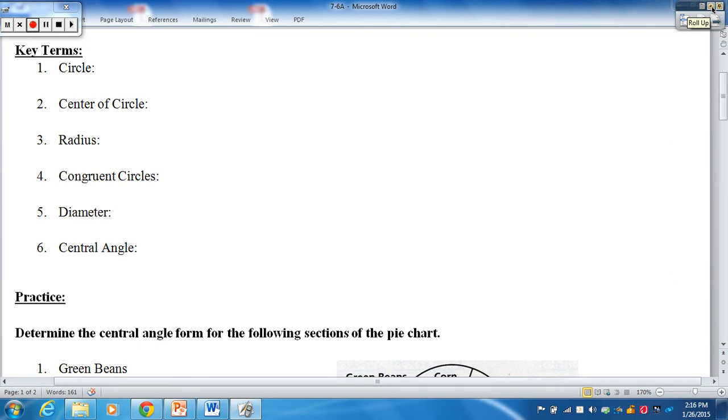As we look at the very first one, key terms, a circle, you may be thinking I know what a circle is, but what is it as a definition? The definition of a circle is the set of all points equidistant from a given point. Remember equidistant means equal distance.